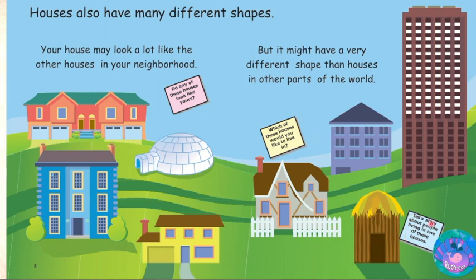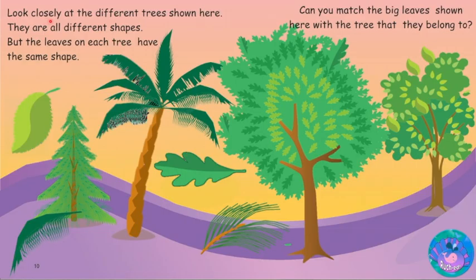Tell a story about people living in one of these houses. Look closely at the different trees shown here — they are all different shapes, but the leaves on each tree have the same shape. Can you match the big leaves shown here with the trees that they belong to?